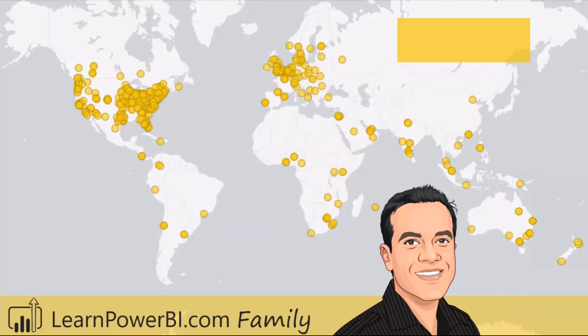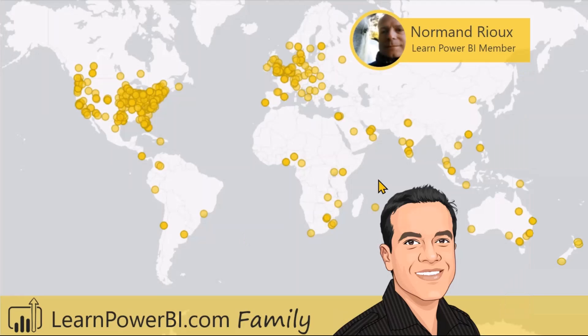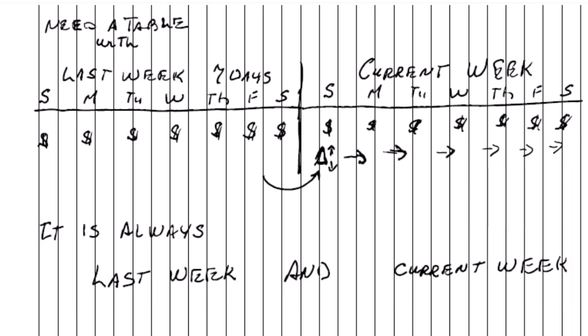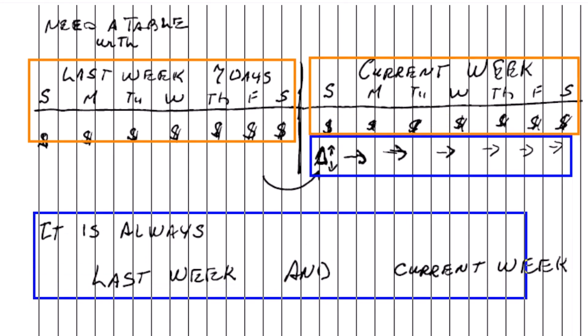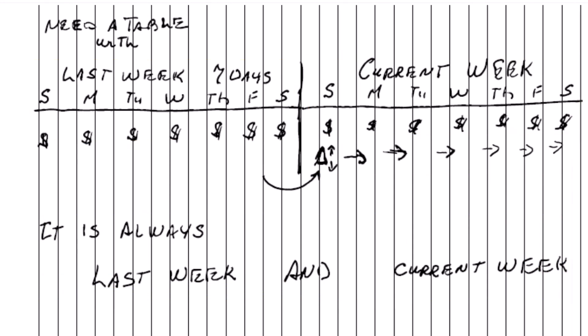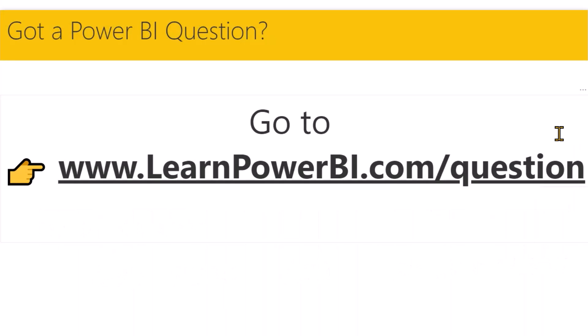This question was asked by Norman, one of our Learn Power BI members. He said he wants to show the last week dollars, the current week dollars, and the delta — the week-over-week difference. The most important part is that it always shows last week and current week, meaning it should update automatically.